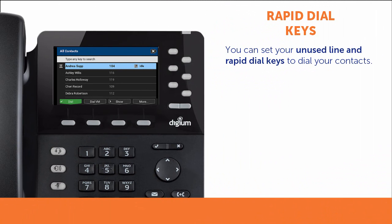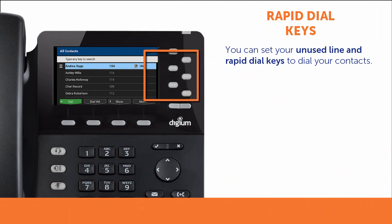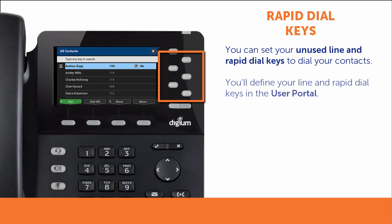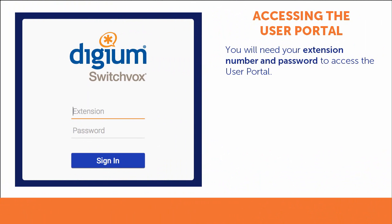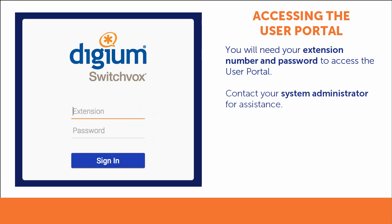You can also use the Contacts list to define your unused Line keys and Rapid Dial keys. First, you will need to access your User Portal. To access the User Portal, you will need your extension number and password. If you do not have this information, contact your system administrator.